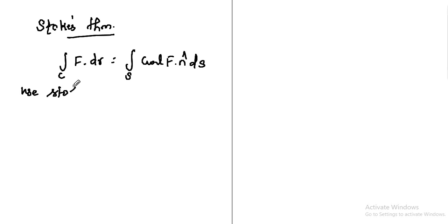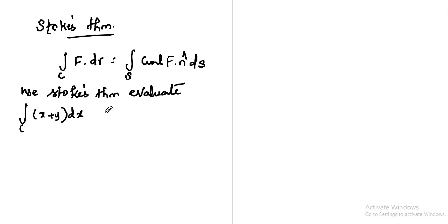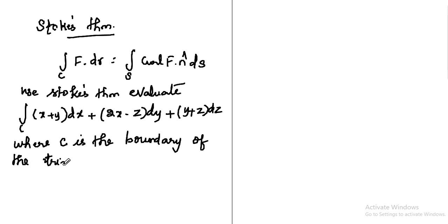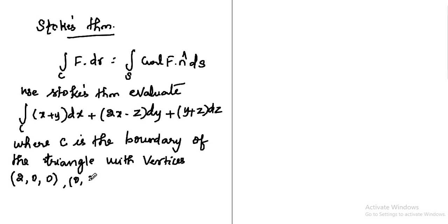Using Stokes theorem, evaluate the integral over C of: (x + y)dx + (2x − z)dy + (y + z)dz, where C is the boundary of the triangle with vertices (2, 0, 0), (0, 3, 0), and (0, 0, 6).